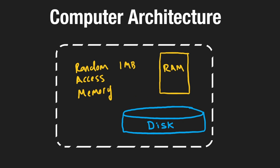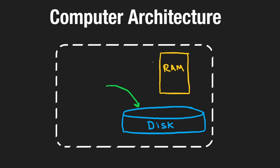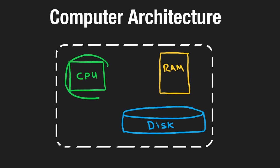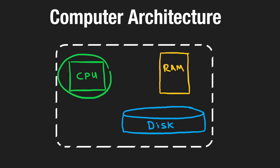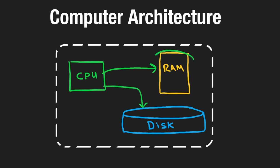As software engineers, we generally accept that RAM is a lot faster than disk. Now, how do we write or read data from disk or RAM? These components can't directly talk to each other, which is why we introduce another component: the CPU — Central Processing Unit. The main things the CPU can do are write and read information to and from RAM or disk.